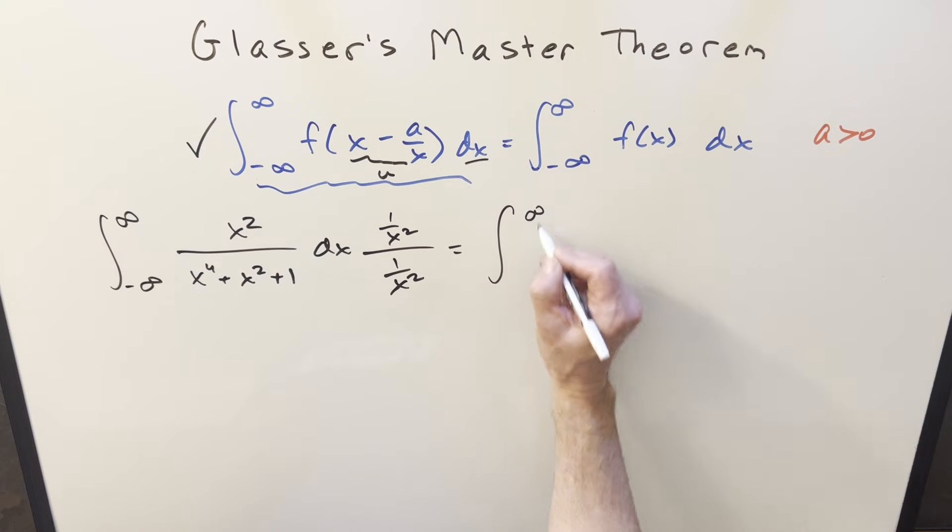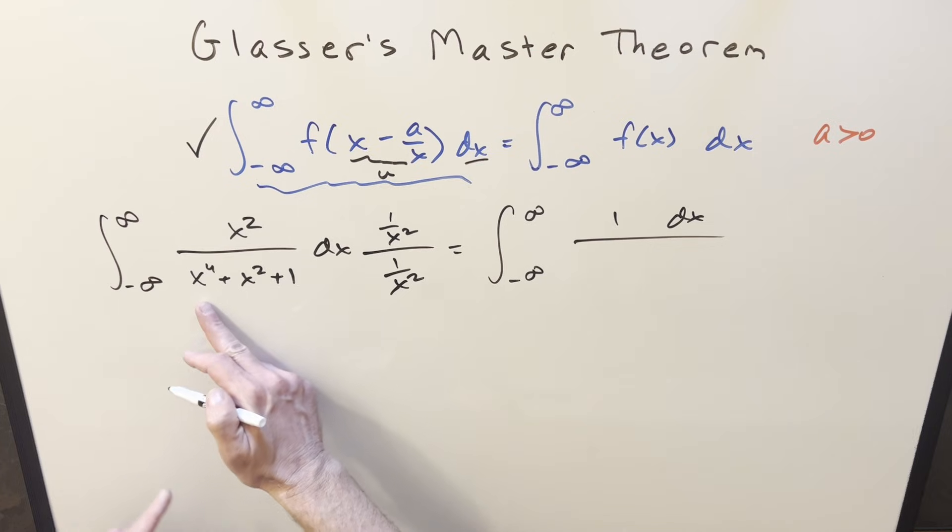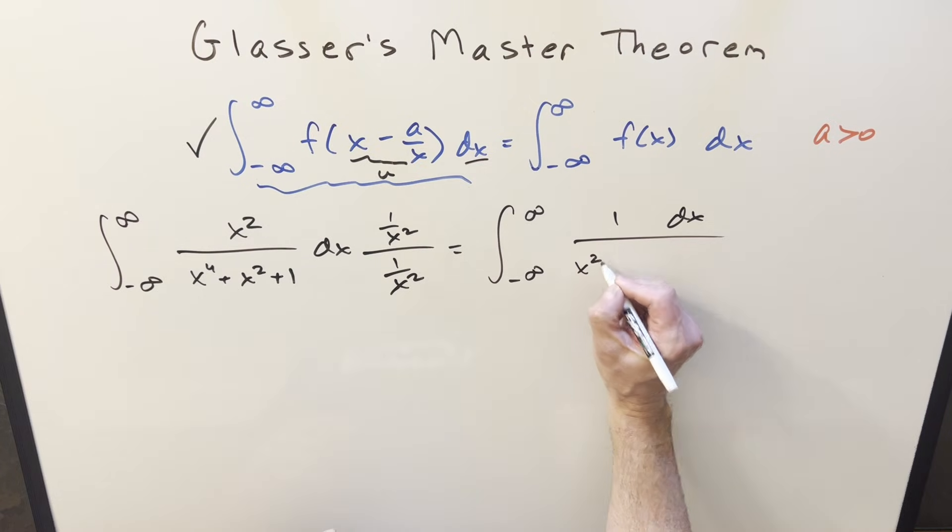So when we do that, what's going to happen is we end up with just 1 dx in the numerator. This is going to reduce the denominator to x squared plus 1 plus 1 over x squared. Now putting together the x squared and the 1 over x squared, you could factor it like x plus 1 over x, but that's not going to be good for this formula.